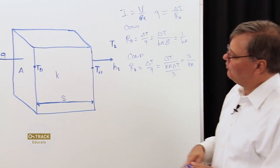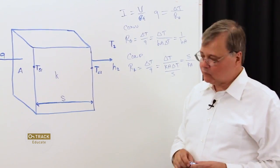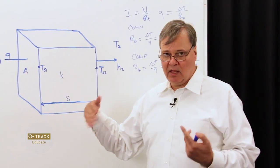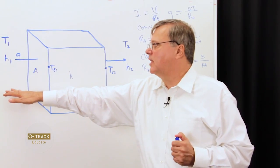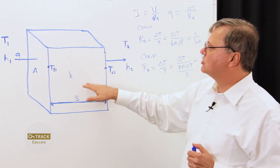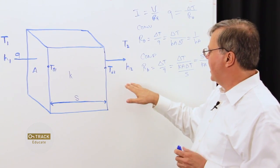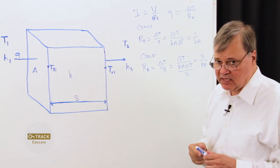All right. So, for our entire system here, we have three thermal resistivities. One for region one, our convection model, our solid conductivity model, and then our second convective model.